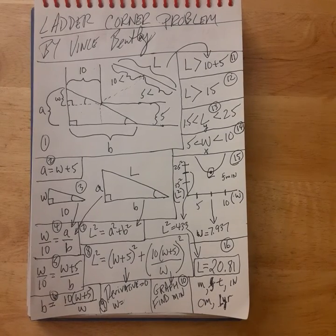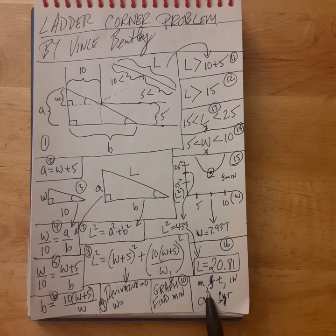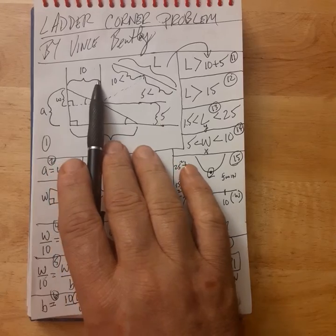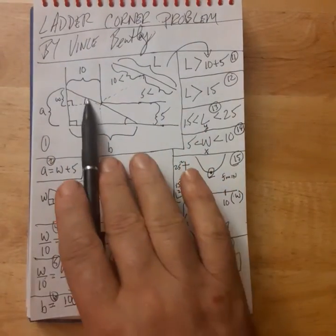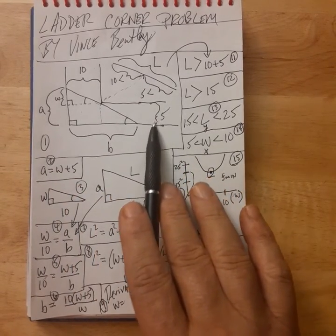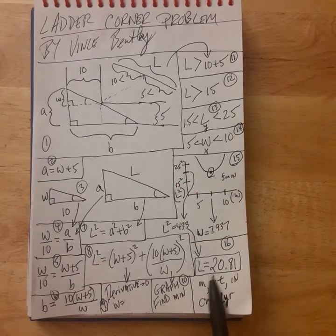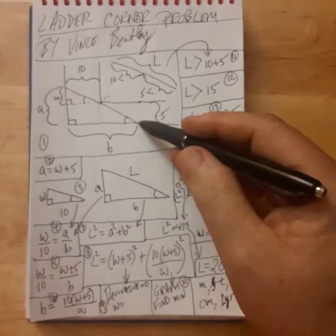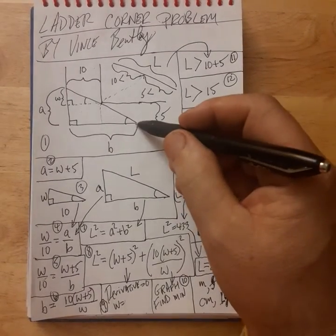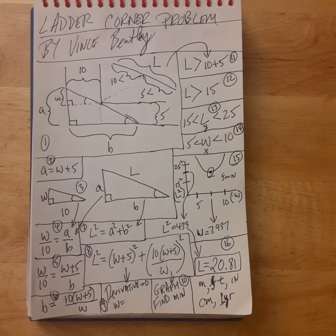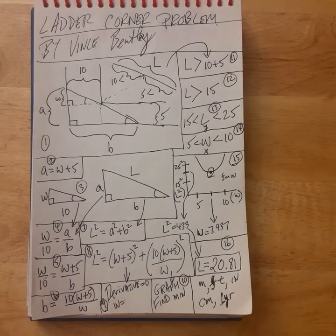Taking the square root of 433, we get L equals 20.81 — in whatever units the 10 and 5 are measured in. So if you have a hallway 10 units wide and want to bring a ladder around a corner into a hallway 5 units wide, the longest ladder that fits is 20.81 units. Keep in mind most ladders have some width, so your practical maximum would be slightly less than 20.81.